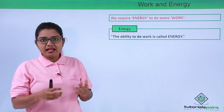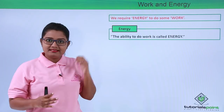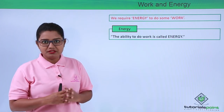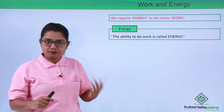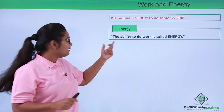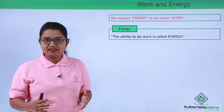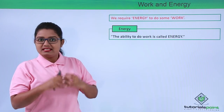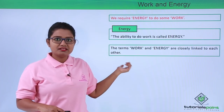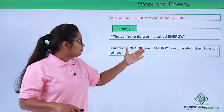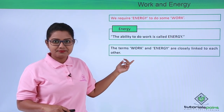If we don't have energy, it is not possible for us to perform any kind of work. The same applies to machines — if we do not supply them with electrical energy, they will not perform the work they are supposed to perform. So energy is what we require. The terms work and energy are very closely linked to each other; work depends upon energy and energy also depends upon work.